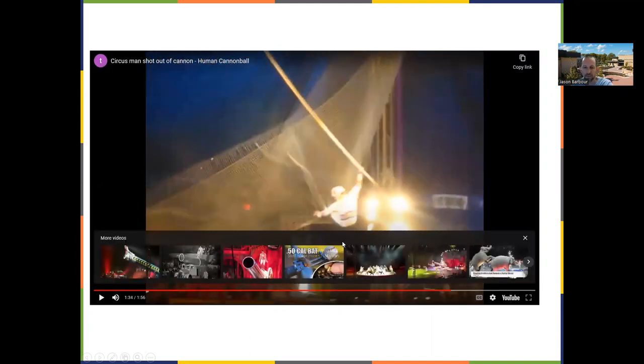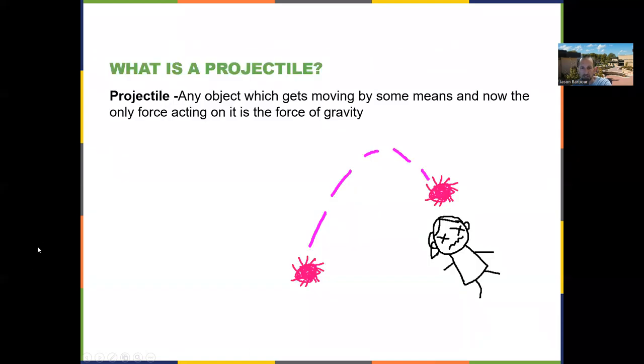All right. That's kind of a silly video, but that is an example of a projectile. And a projectile is something that has gotten into motion and is now under the influence of gravity alone. So that should remind you of the definition of free fall, which is when gravity is the only significant force acting.